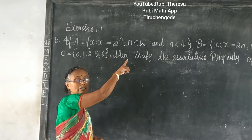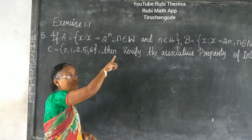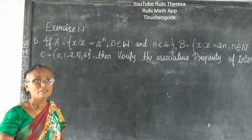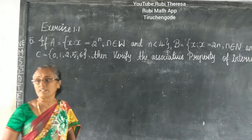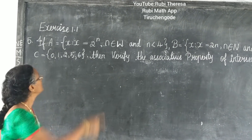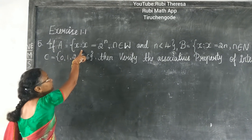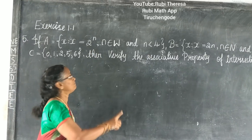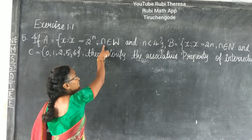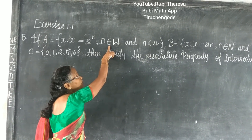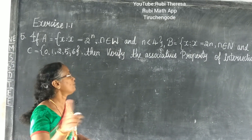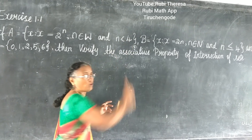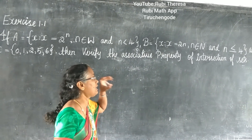We have studied about the three forms of sets. What is the name of this form? Z-pilger form. It takes place such that X equal to 2 to the power of N, where N is an element of W — W means whole numbers — and N is less than 4.